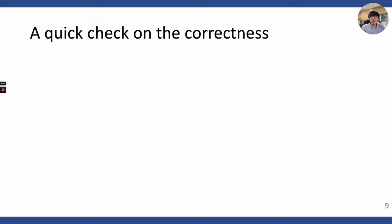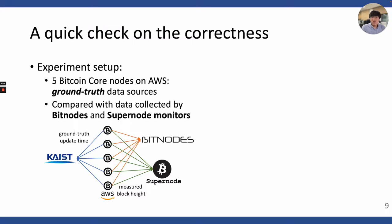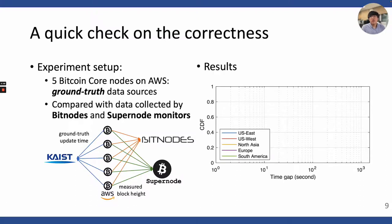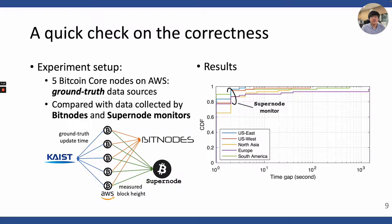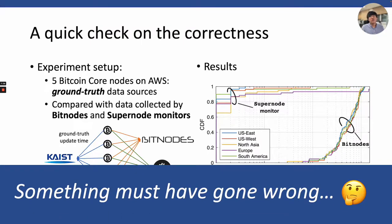Before we start, we quickly check the correctness of those two Bitcoin monitors. We build 5 Bitcoin nodes on AWS in different geographic regions and run Bitcoin full nodes to get the ground-truth block update time of these nodes. Then we compare it with measurement data from Bitnodes and supernode monitors. Ideally, the time gap between our ground-truth data and the measured block reception time should be zero, and the CDF plot should look like a straight line. However, in our simple test, the supernode monitor tends to be slower than the ground truth, sometimes by a few minutes. Worse, the Bitnodes monitor is consistently slower than the ground truth by a few minutes, almost always. From this, we have clear evidence that something must have gone wrong with these two Bitcoin monitors.